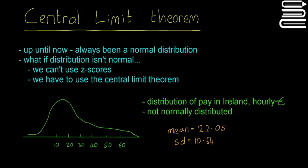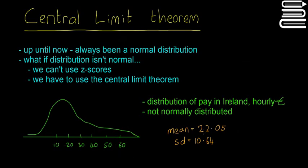The example we have here is the distribution of pay in Ireland as an hourly rate in euros, and it's not normally distributed. A lot more people are at the lower end of the scale, and only a few people get the higher amounts — 50 and 60 euro an hour. The mean is 22.05 euro an hour and the standard deviation is 10.64 euro an hour.